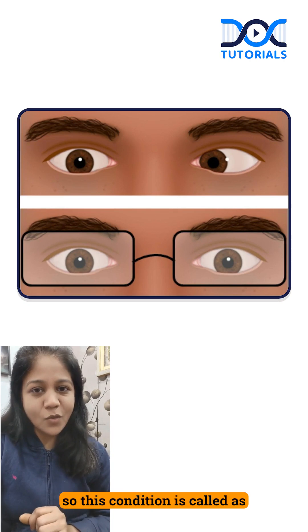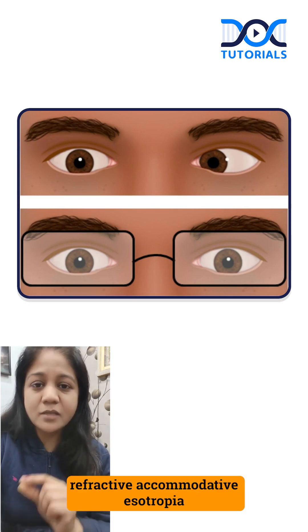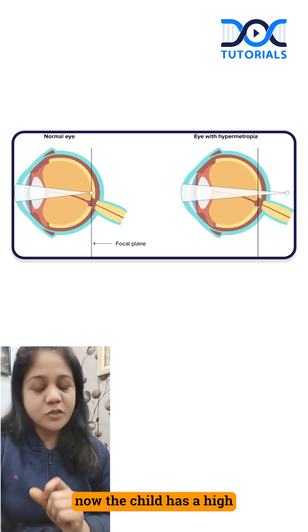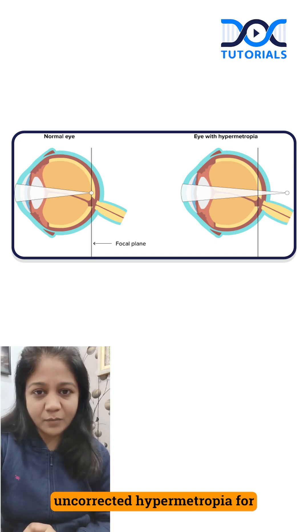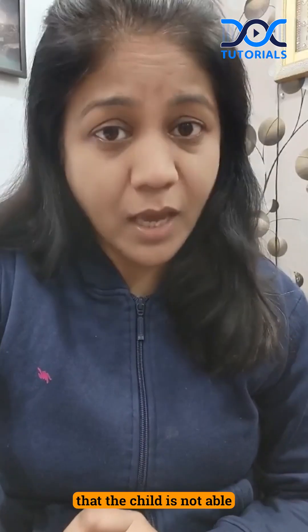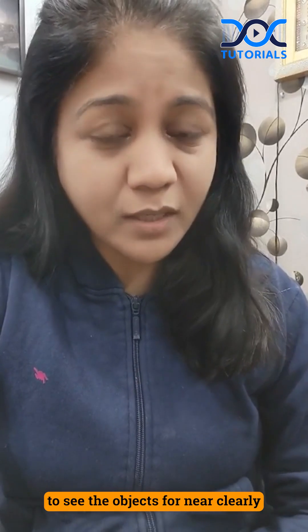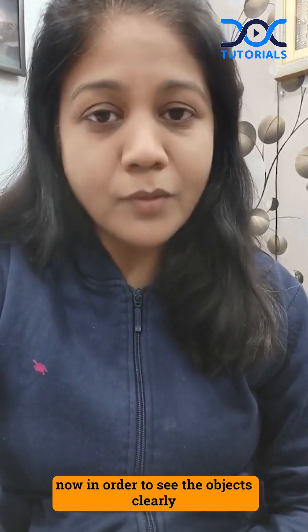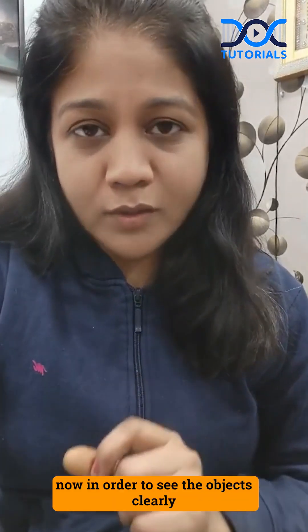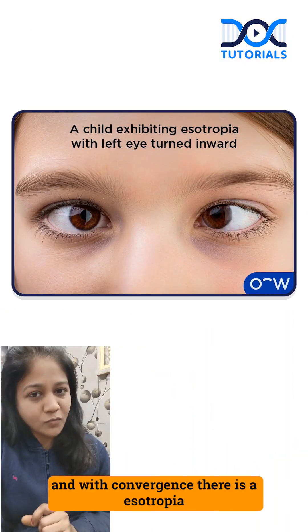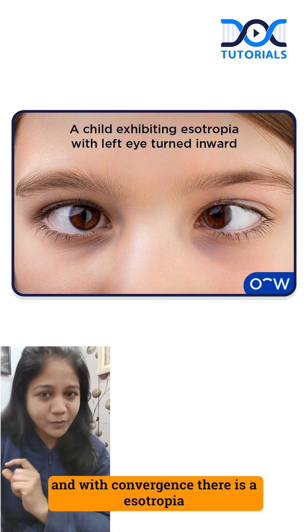This condition is called refractive accommodative esotropia. The child has a high uncorrected hypermetropia, and as a result is not able to see objects for near clearly. In order to see clearly, the child has to exert convergence, and with that convergence there is an esotropia.